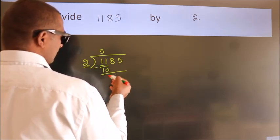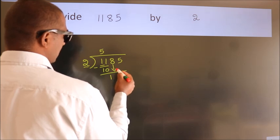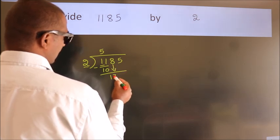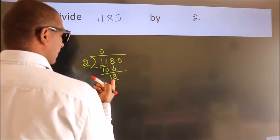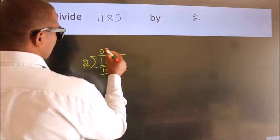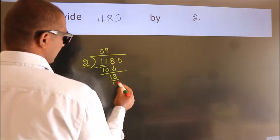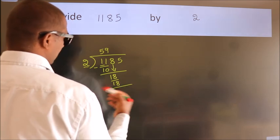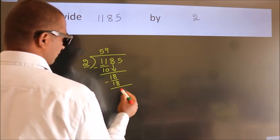After this, bring down the beside number. So 8 down, so 18. When do we get 18? In 2 table, 2 times 9 equals 18. Now we subtract, we get 0.